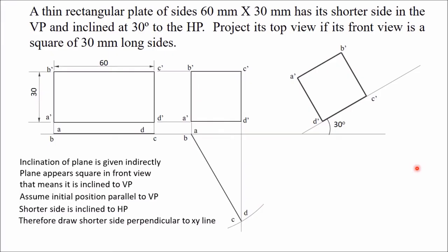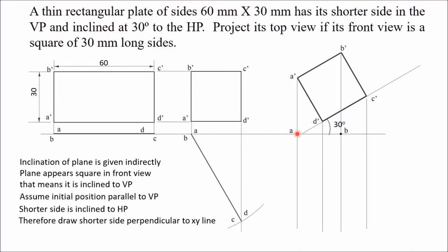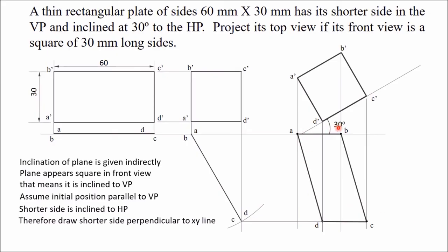Once you get this line, complete the square by drawing two perpendicular lines of the same length and mark these two points as A' and B'. This is the final front view of the required plane. Now to get the top view, draw vertical projectors from all the points. Draw horizontal projectors from A and B — these intersect the vertical projectors from A' and B' at two points, giving A and B. Draw horizontal projectors from C and D — these give points C and D. Once you get all these points, join them in sequence with thick lines. This is your required top view.